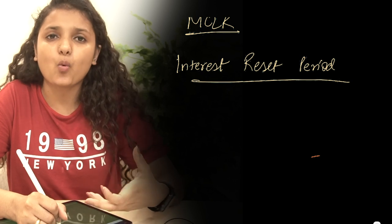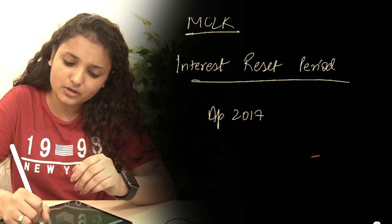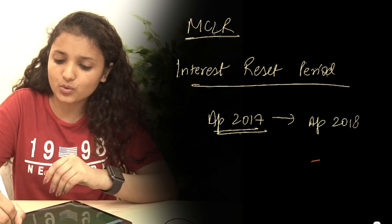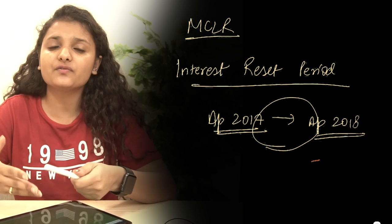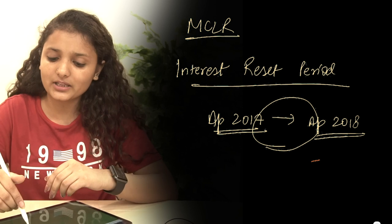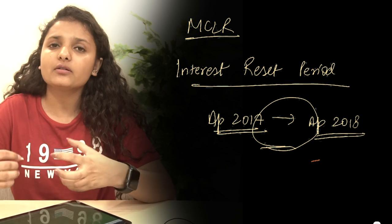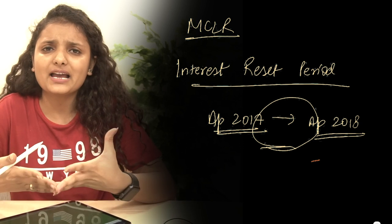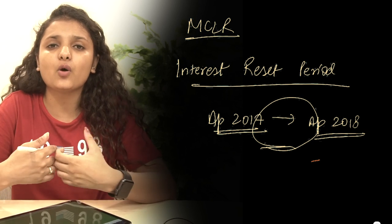Through an example: suppose you go to a bank to take a home loan at the one-year MCLR in April 2017. As per the interest reset period mechanism, only in April 2018 will your interest rate be changed. During this one-year period, any changes by the RBI in its repo rate will not be reflected in your interest rates. It is only after one year that your interest rate would be changed. Similarly, for a three-month MCLR rate, only after the expiry of three months will your rate be changed.